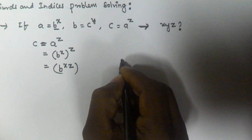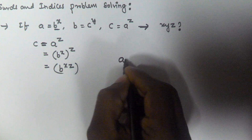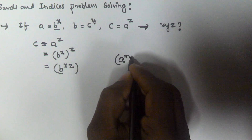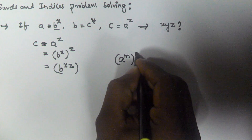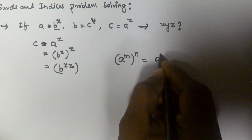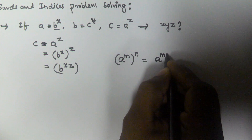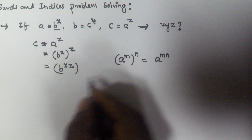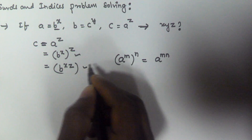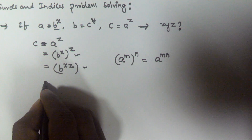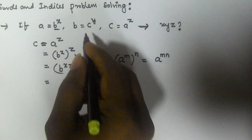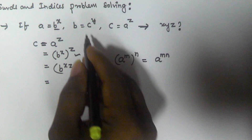Why? Because we have a formula in indices: a to the power of m, to the power of n, is equal to a to the power of mn. So using this formula, I can write it as b to the power of xz. Now we also have b equals c to the power of y.